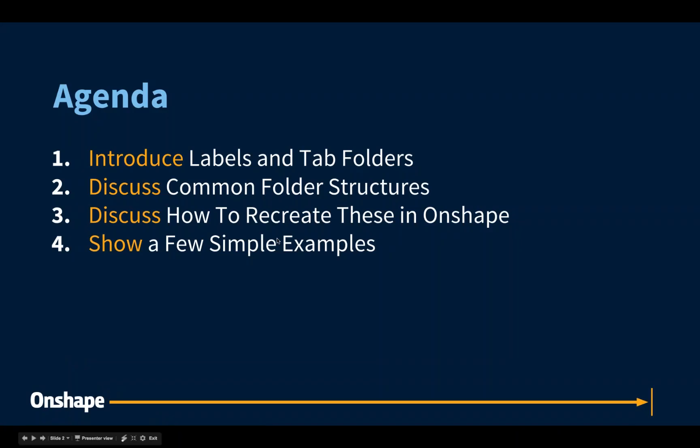A brief agenda. I want to introduce you to labels and tab folders — how to use labels, how to use tab folders, and how they can help you organize your Onshape data. We'll also discuss common folder structures. If you've been using another professional CAD application that uses files, you'll often have a folder structure to manage and store all those files. It's very similar in Onshape — we can store tabs within a document using that same kind of folder structure. I also want to discuss how to recreate these structures: how to create folders, subfolders, how to put parts into them, and kind of pare down your documents.